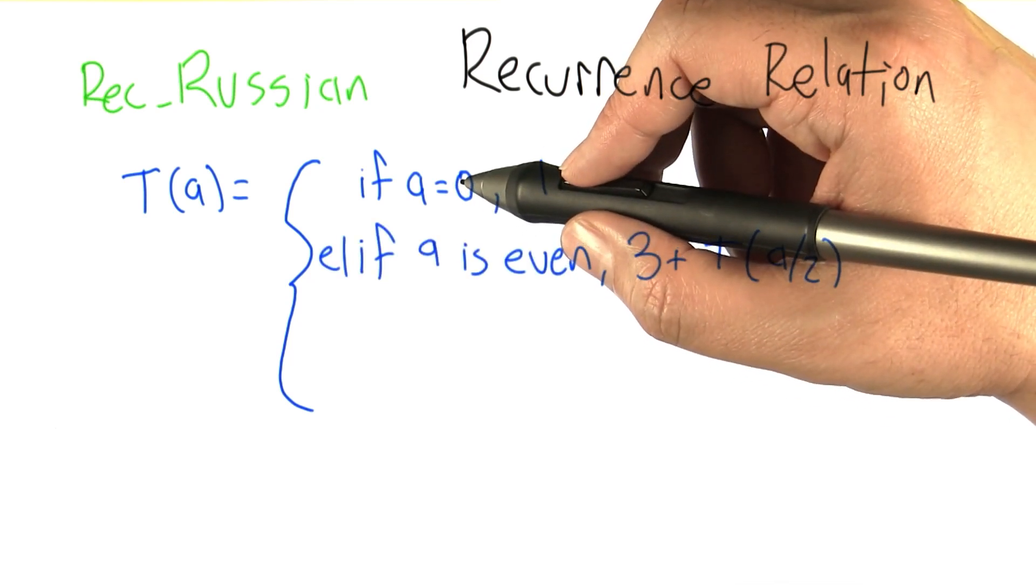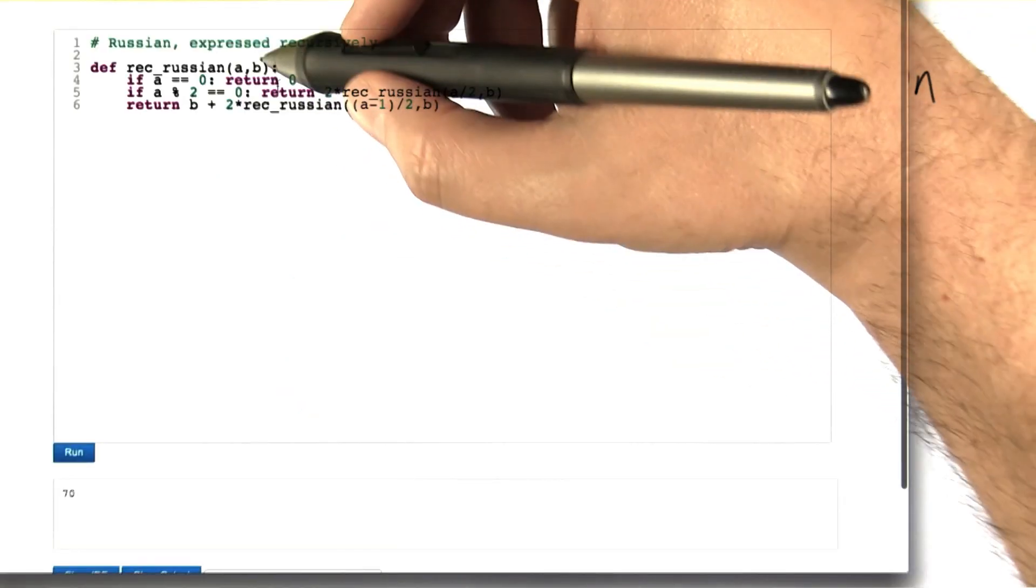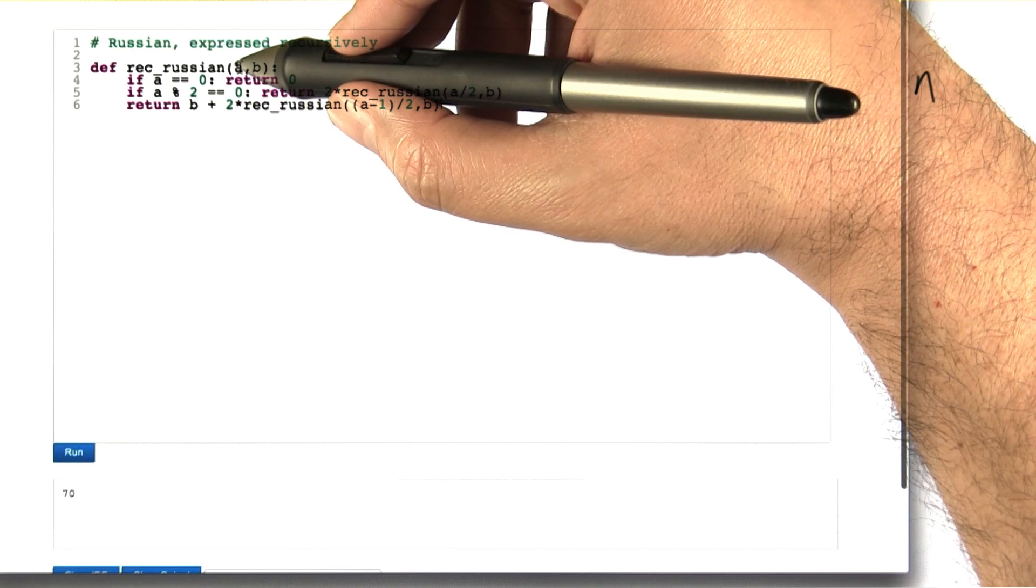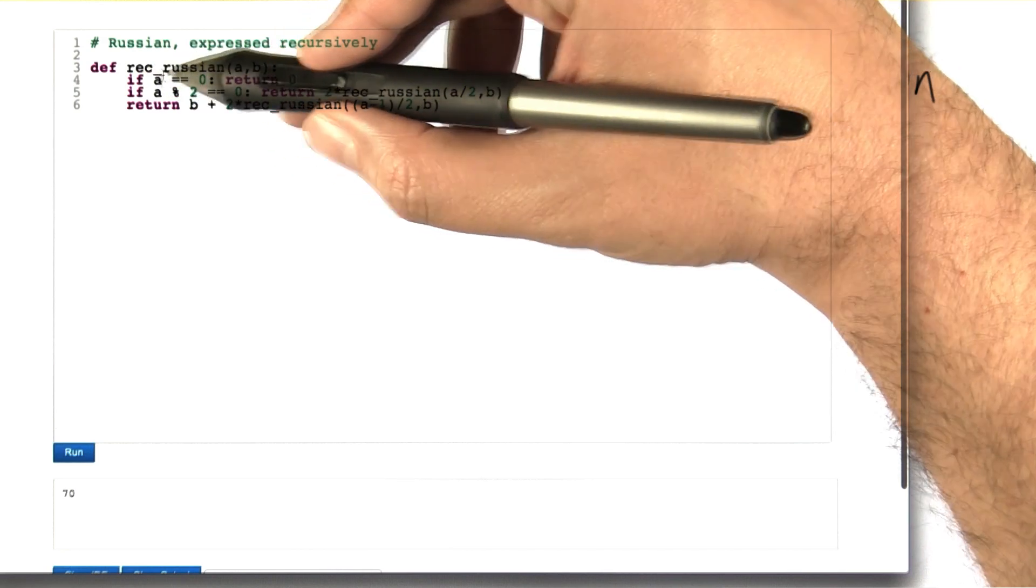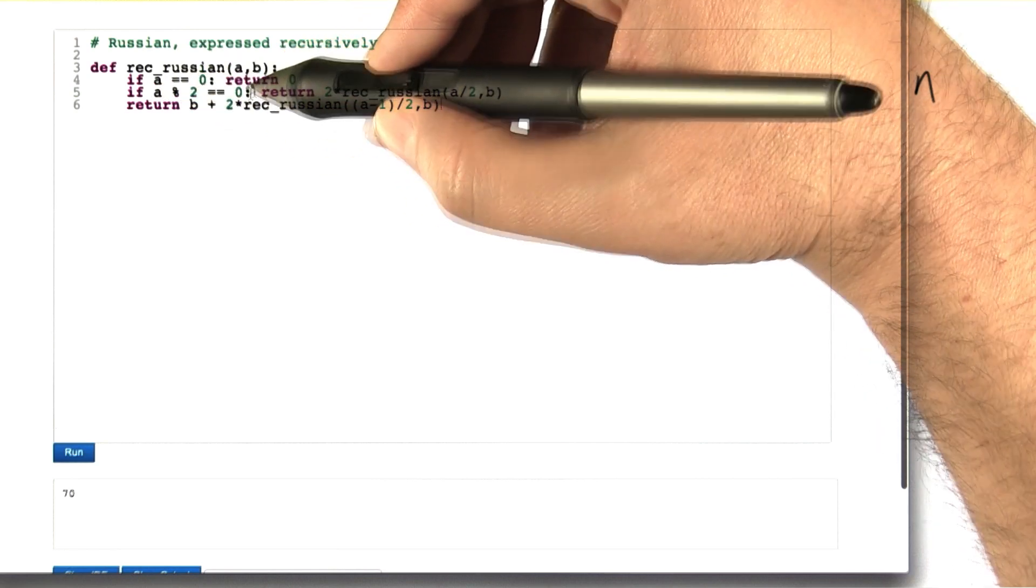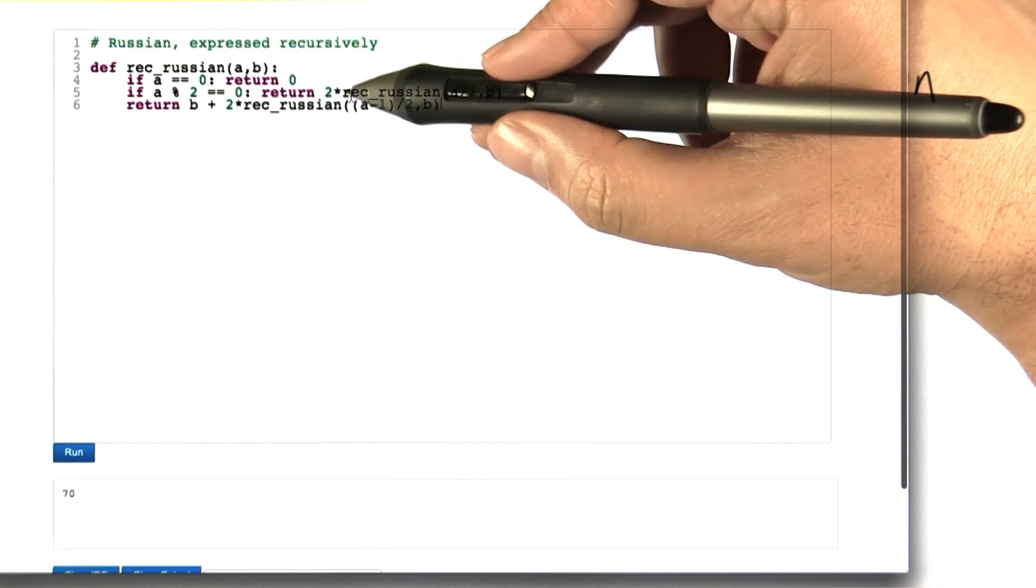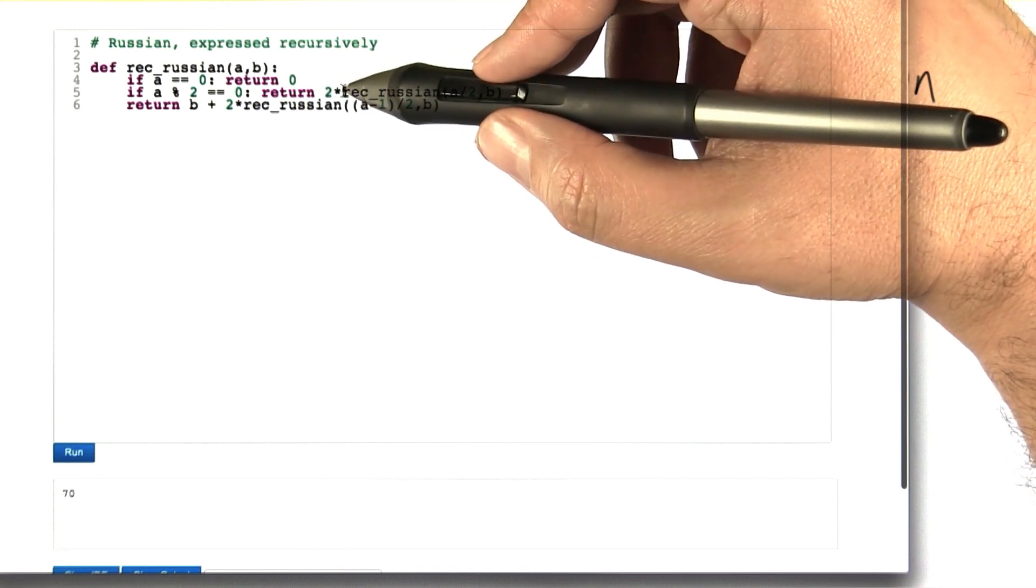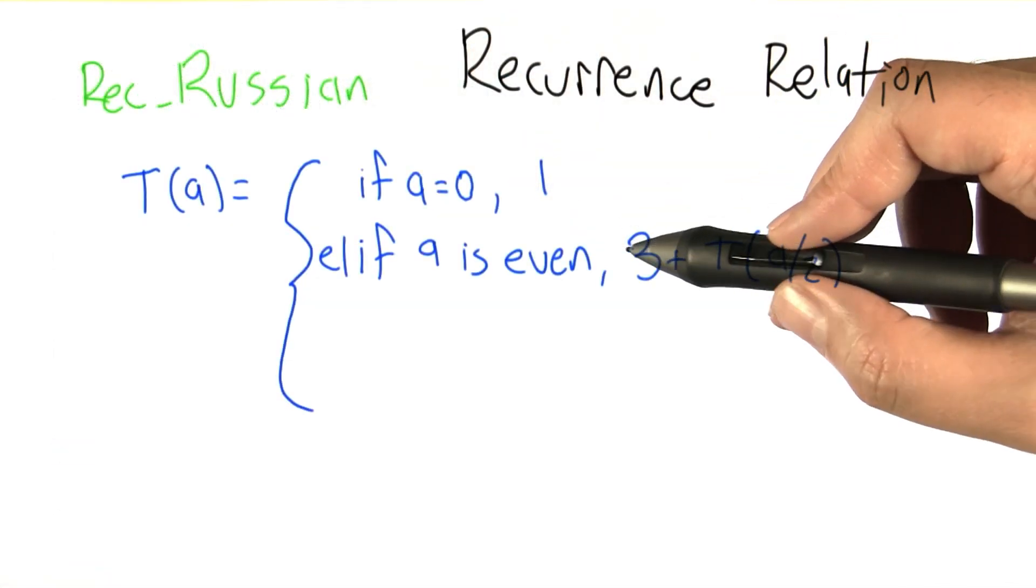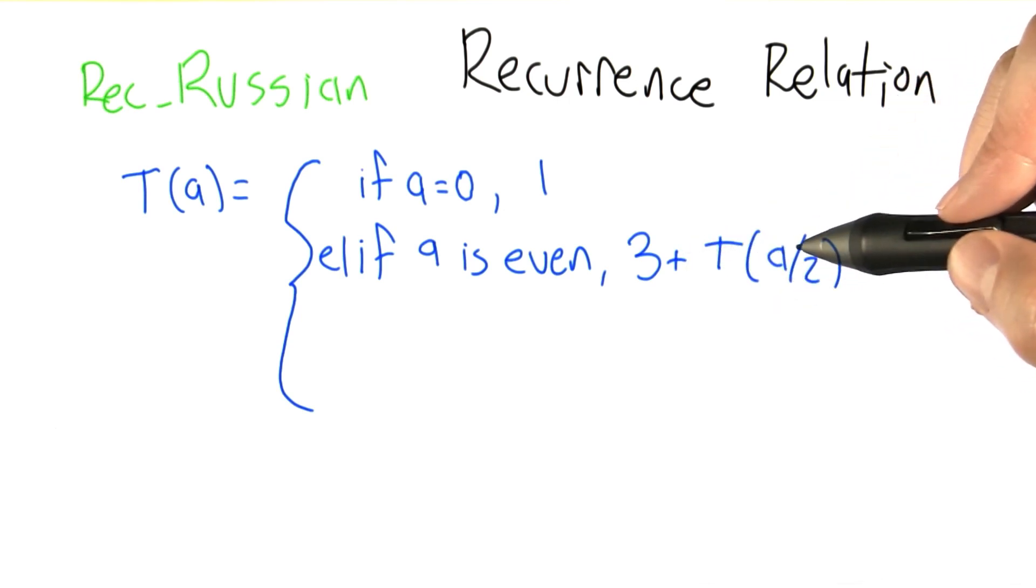Otherwise, if a is bigger than 0 and even, let's take a look at what rec-Russian does in that case. We come in here with a number that is even and greater than 0. It's going to execute the condition of this if statement, which fails, so there's one of that, then one more to do this, plus it's going to recursively work out the value of this quantity, and then one more operation to multiply that by 2. I call it a total of 3 plus however long it takes to multiply a over 2 times b.